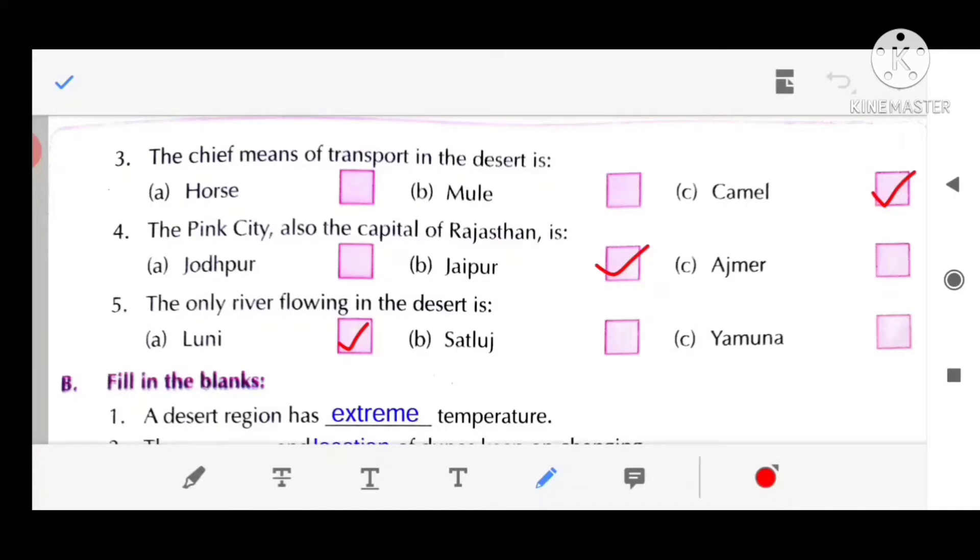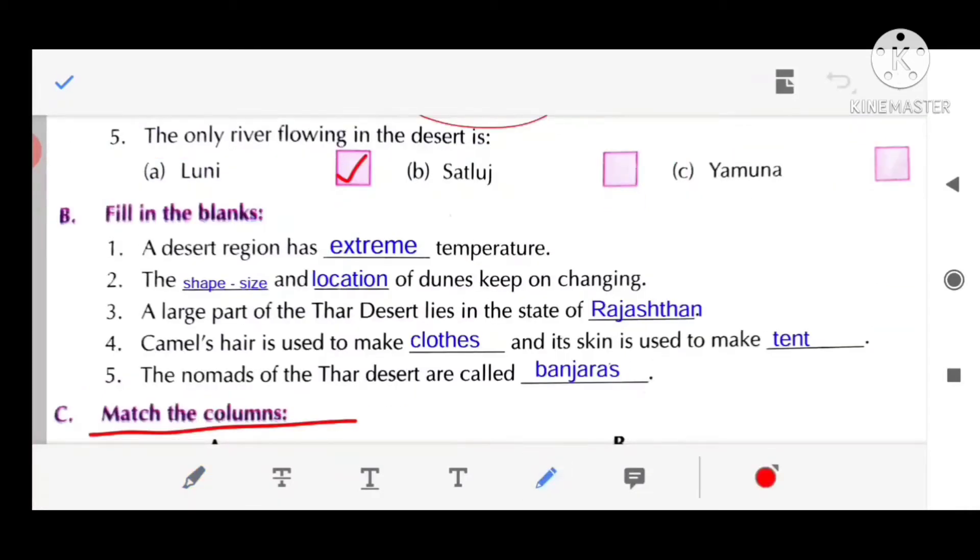The chief means of transport in the desert is camel. The pink city and also the capital of Rajasthan is Jaipur. The only river flowing in the desert is Luni.